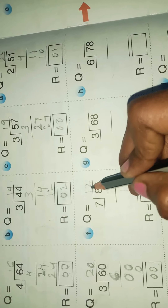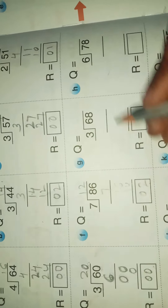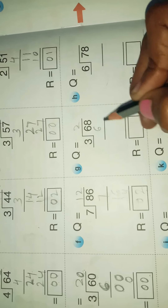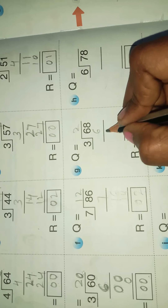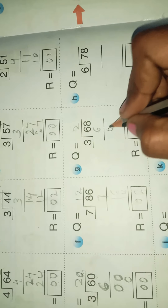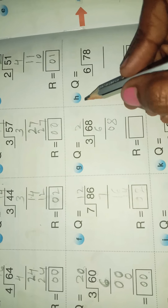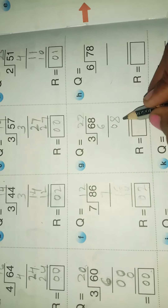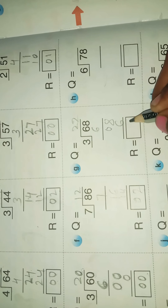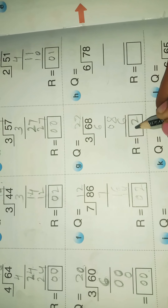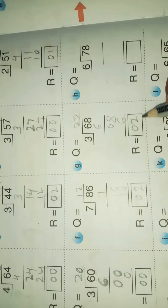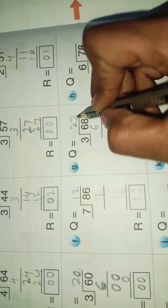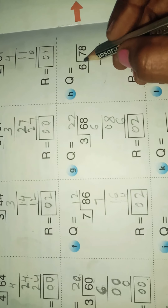Next example: 3 goes into 6, 6 minus 6 is 0. Bring down 8 below. 3 goes into 8, 8 minus 6 is 2. The remainder is 2 and the quotient is 22.